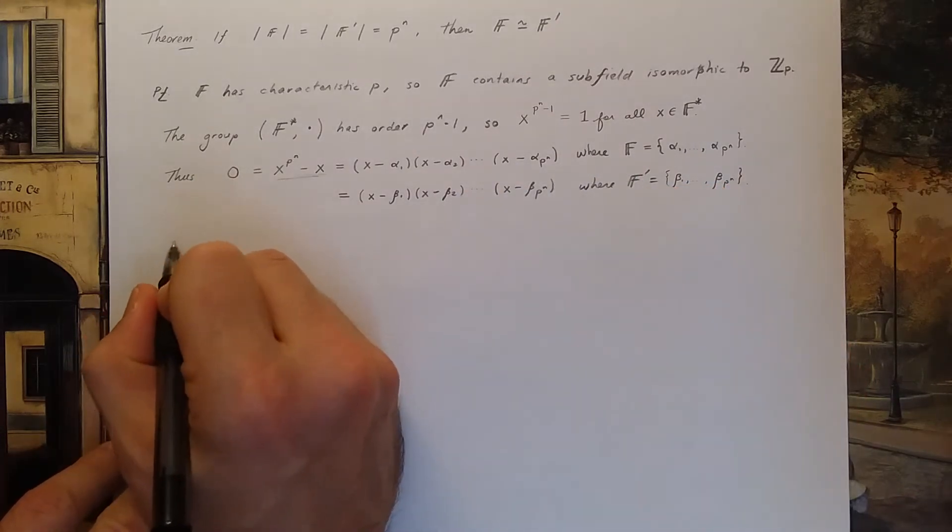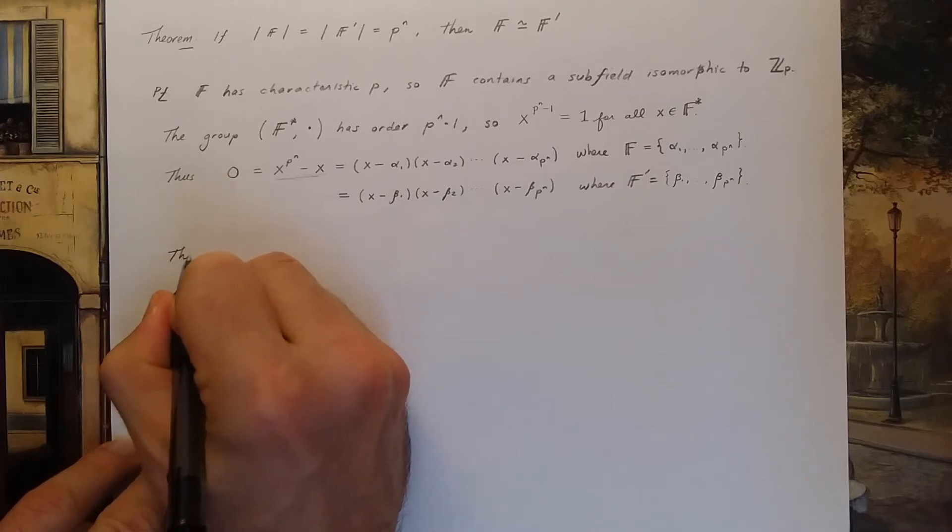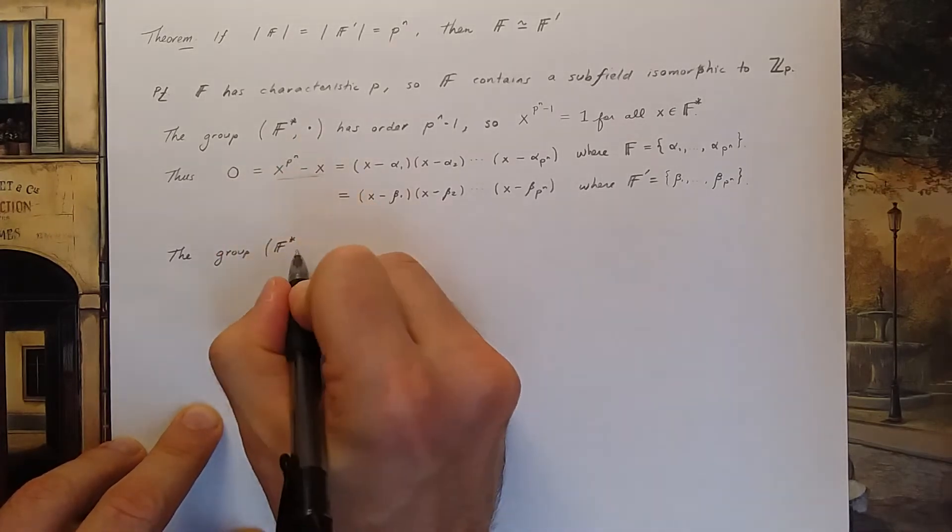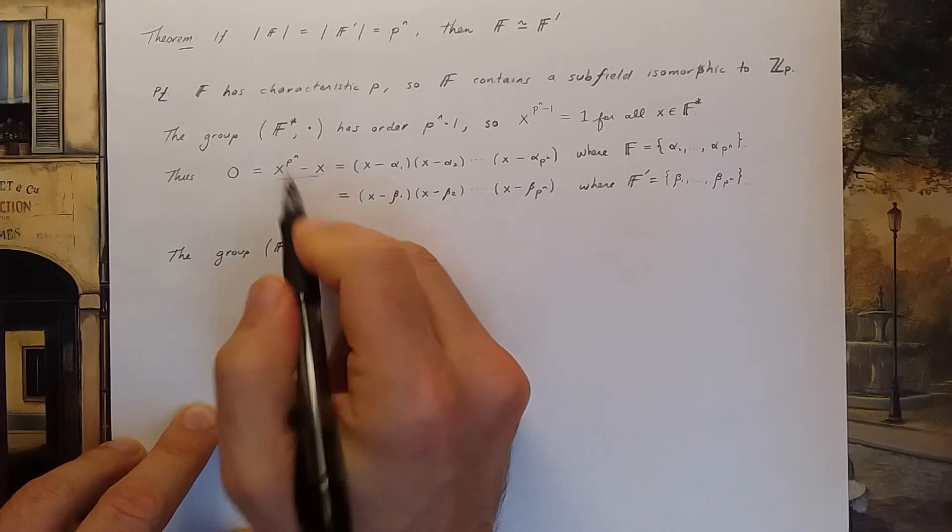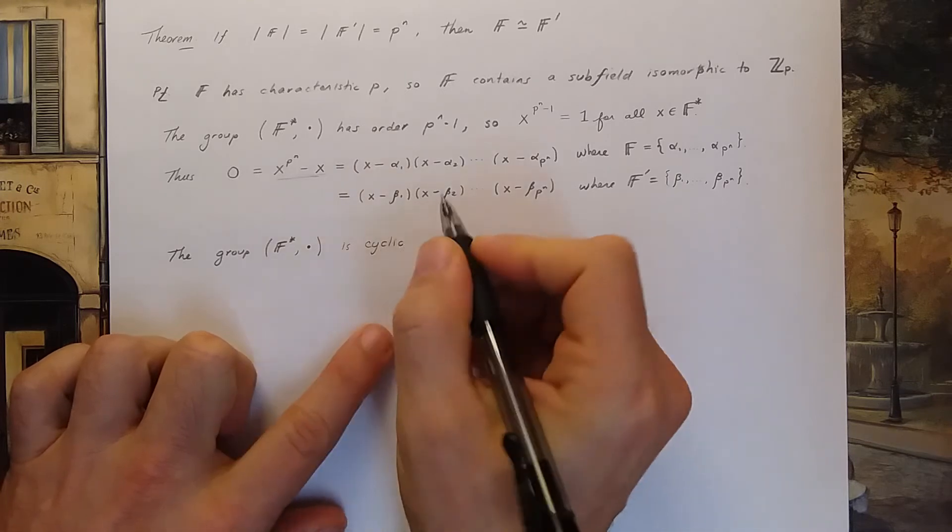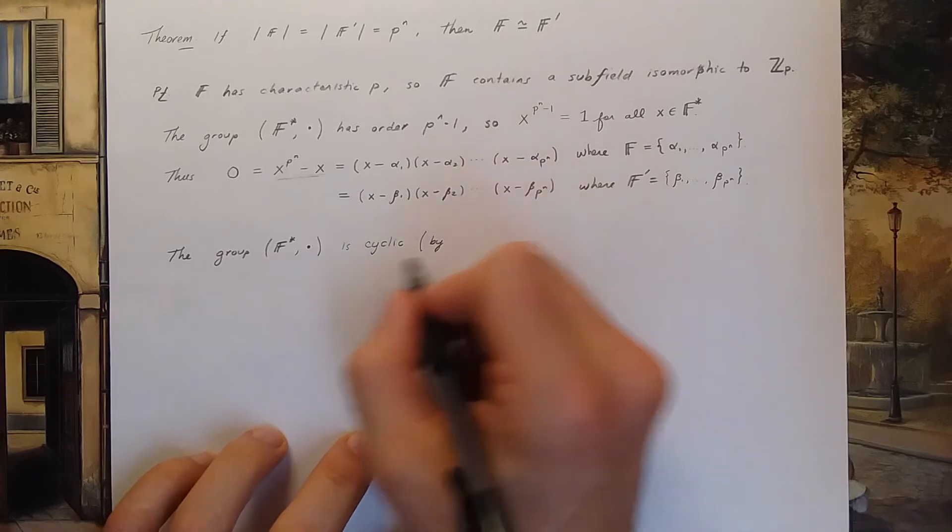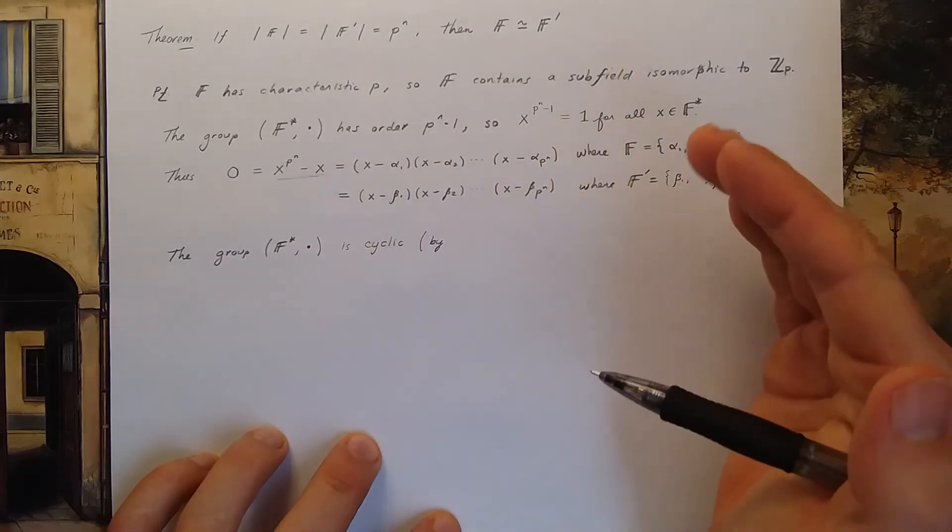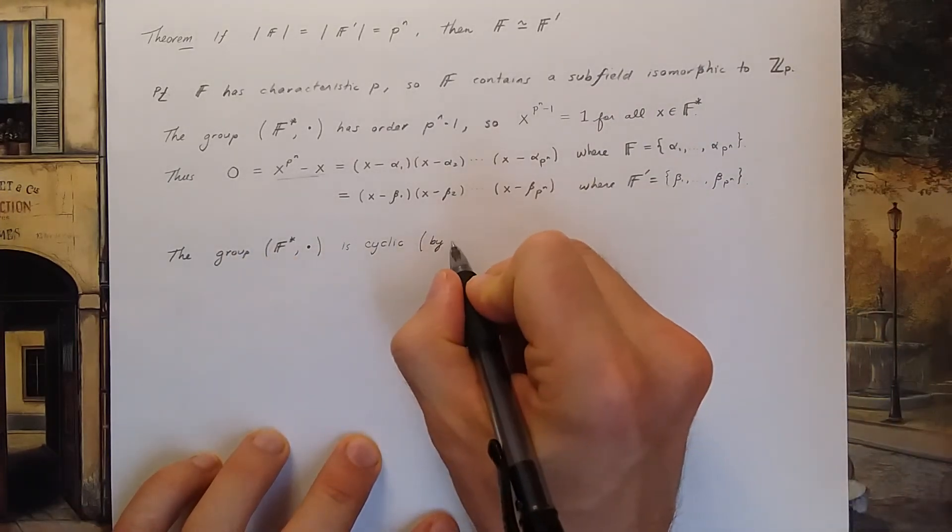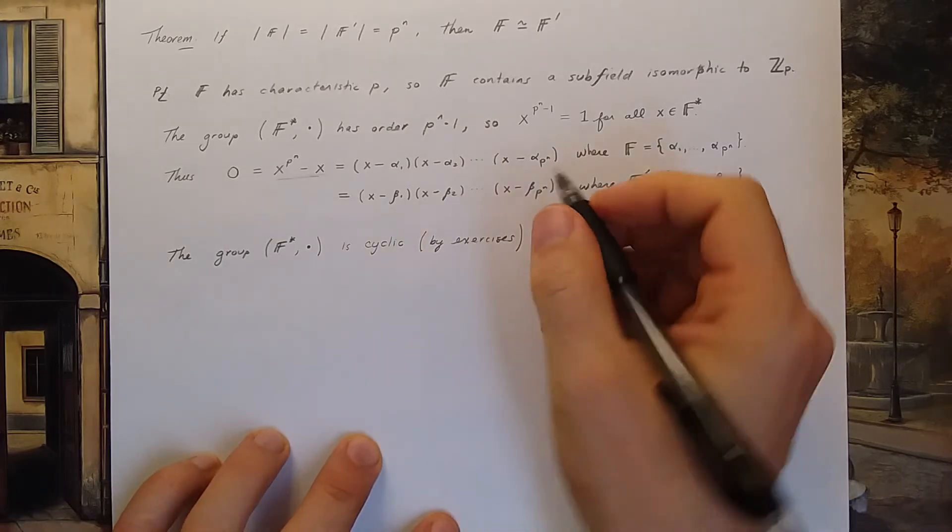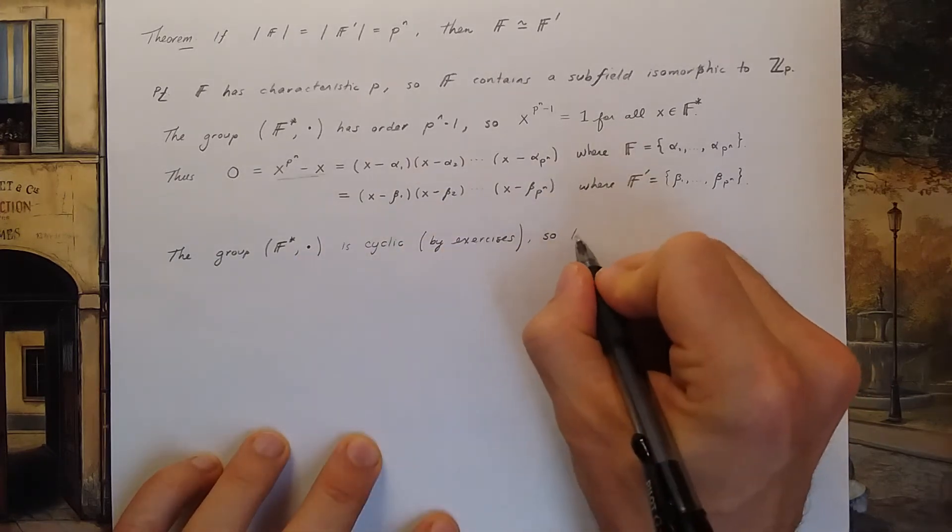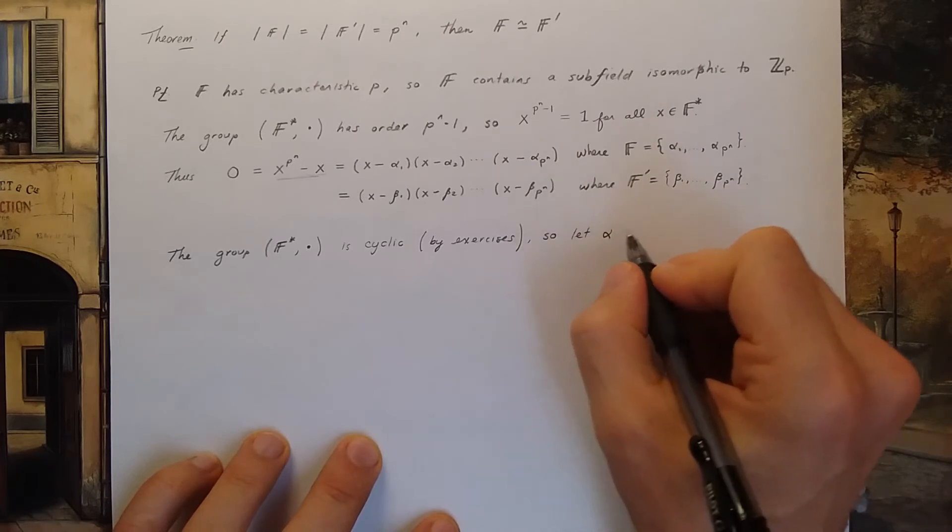Okay well now I claim that the group F with the zero thrown away and together with the operation of the field multiplication that group is cyclic. The reason is because I have you prove this as a homework exercise. So I wrote a homework exercise where I outline a proof of this fact.